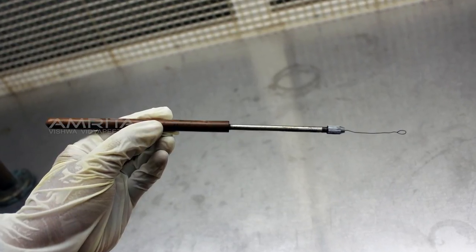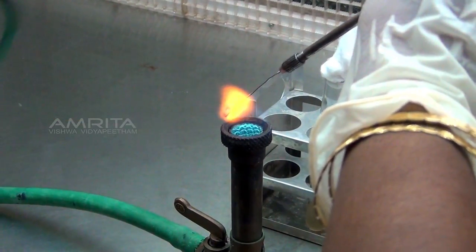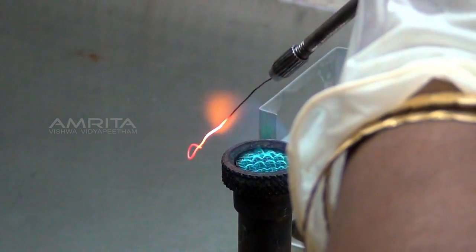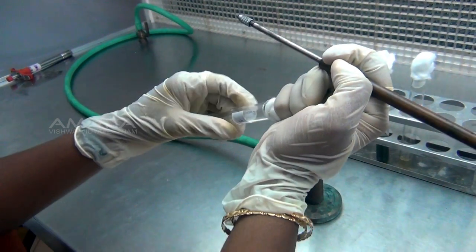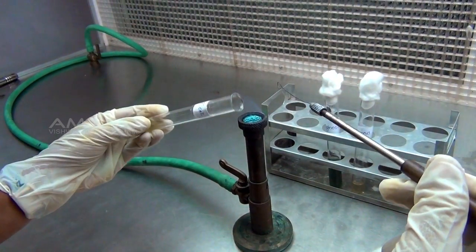Take an inoculation loop and sterilize it in the blue flame of the Bunsen burner till red hot and then allow it to cool. Remove the cotton with the small finger of your right hand and flame the mouth of the tube.